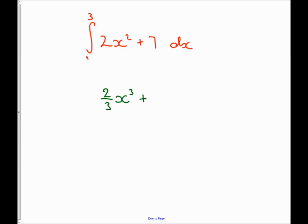Again, the 7 is really 7x to the power 0. I add 1 to that power, I get x to the power 1, or just x. Then I divide by my new power, so 7 divided by 1 is just 7.